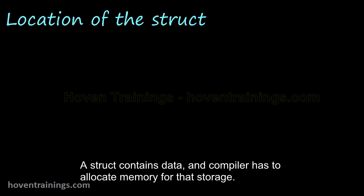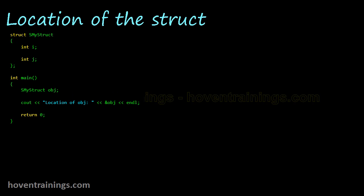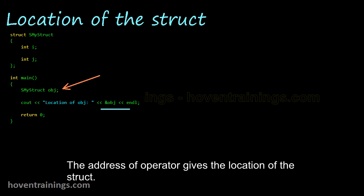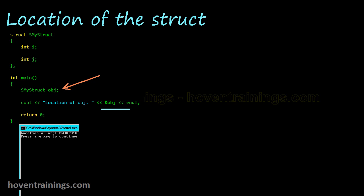A struct contains data, and the compiler has to allocate memory for that storage. In this code a struct is defined and instantiated. This is the object of the instantiated struct. This prints the address of the object. The address of operator gives the location of the struct. This is the output on my computer.